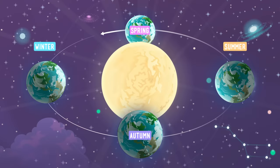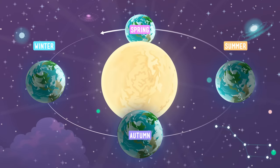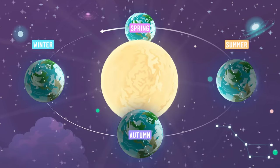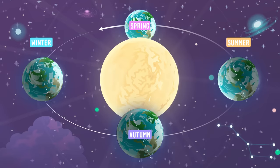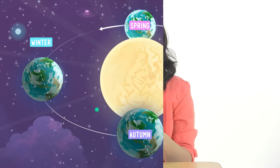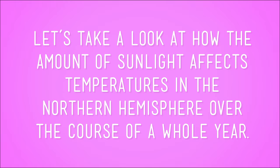But what about spring and autumn? During these two seasons, the Earth's orbit causes the northern hemisphere to be neither tilted toward the sun nor away from it. So temperatures during the spring and fall are more moderate — not too hot and not too cold — since the entire globe is getting about the same amount of direct sunlight at once.